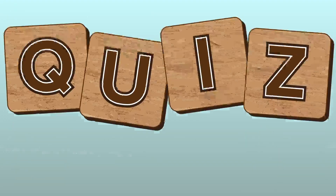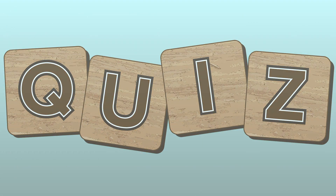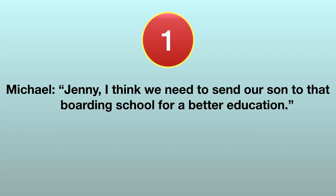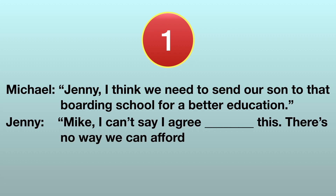Let's have a quiz to see if you really understand the differences. Number 1. Michael says: Jenny, I think we need to send our son to the boarding school for a better education. And Jenny's response is: Mike, I can't say I agree this. There's no way we can afford the tuition fee.